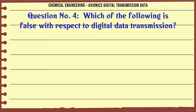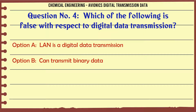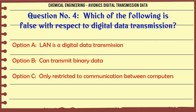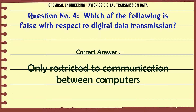Which of the following is false with respect to digital data transmission? A: LAN is a digital data transmission. B: Can transmit binary data. C: Only restricted to communication between computers. D: Can transmit analog data. The correct answer is C — only restricted to communication between computers.